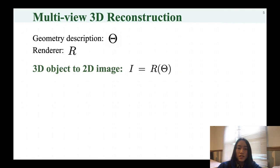Given a set of parameters theta representing the geometry description and renderer R, it is a forward operation to produce an image I. In contrast, optimizing geometry and other scene parameters from images is a backward process.